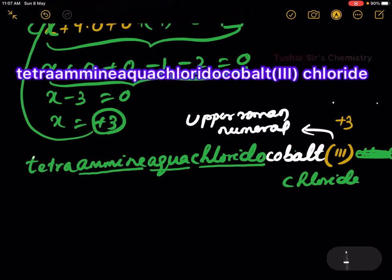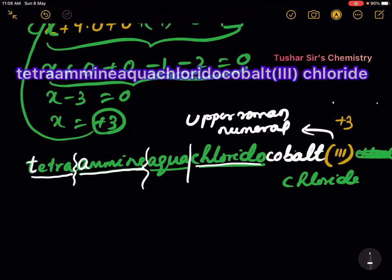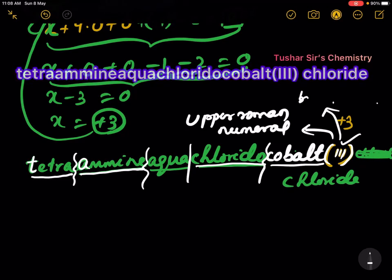The first letter of the complex ion is a small letter — tetra. There is no gap between the ligand names: tetramine, then aqua — no gap — then chlorido — no gap — then cobalt. The oxidation state of cobalt is written in parenthesis. Then the counter ion, chloride, follows. The complex part is written as one word.